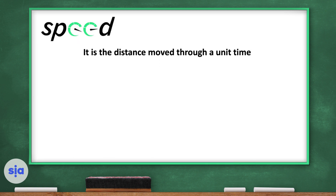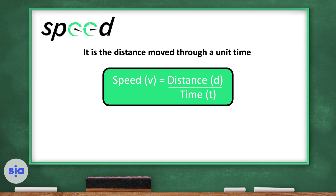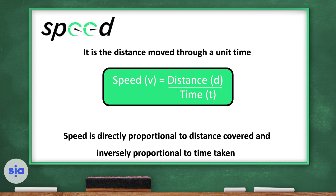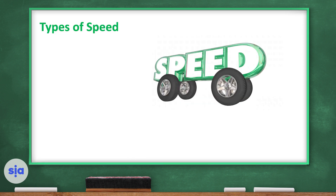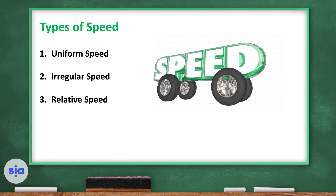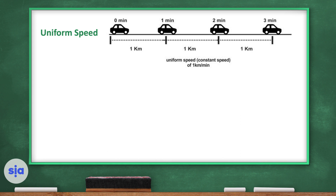Speed is the distance moved through a unit time, calculated by dividing distance by time. Speed is directly proportional to distance and inversely proportional to time taken. There are three types of speed: uniform speed, irregular speed, and relative speed. In the first type — uniform speed — look at this example.